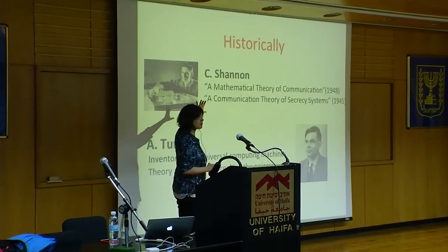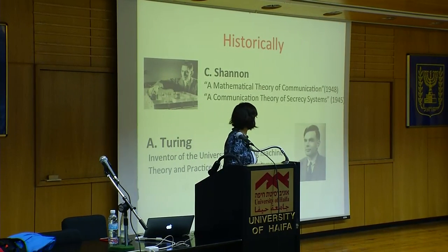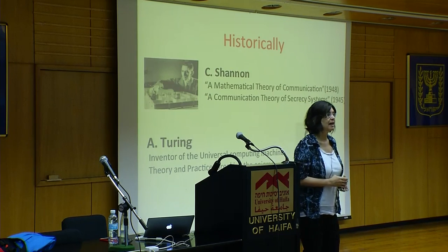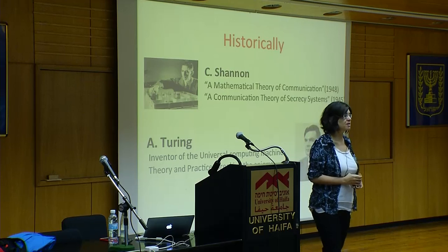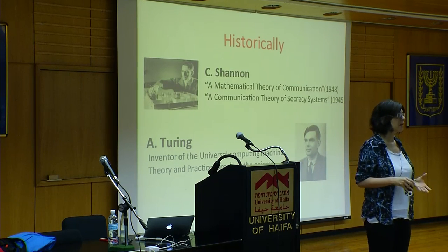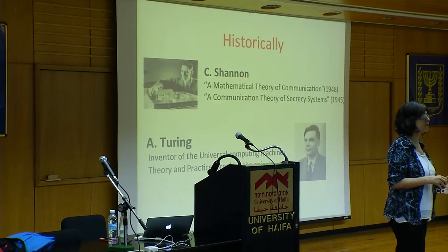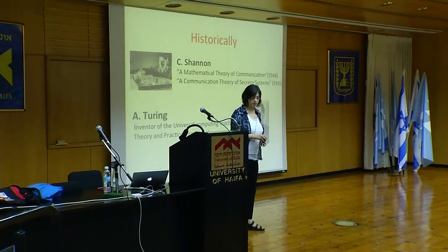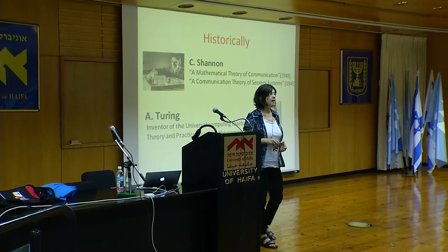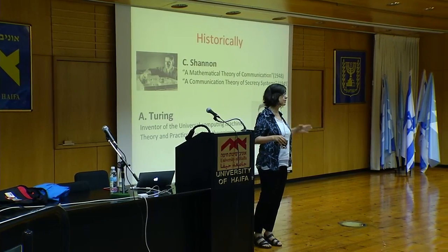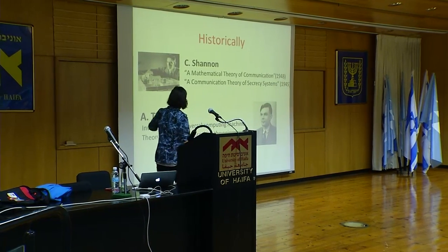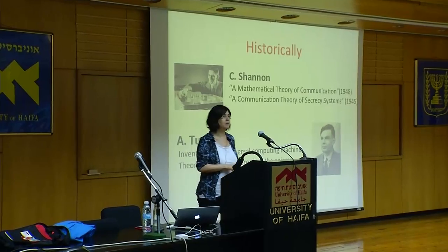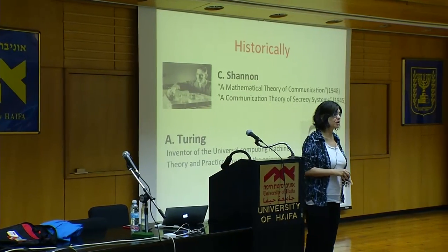If you think about Shannon, there are two famous papers he wrote in 1948 and apparently 1945. One was 'A Mathematical Theory of Communication,' where he introduces information theory, and the other was 'The Communication Theory of Secrecy Systems,' where he defines what it means for a cryptographic system or encryption method to be perfectly secret. The definition of secrecy and the definition of information, in Shannon's mind, were very much linked.